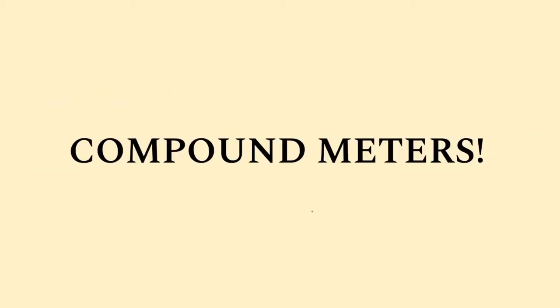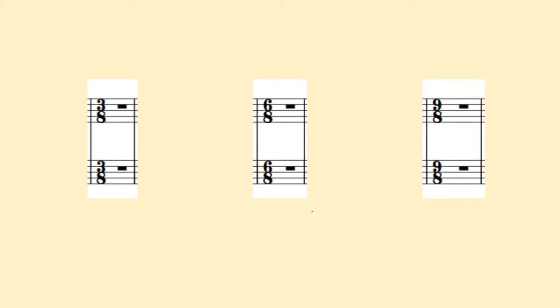Compound meters are meters that divide the beat into three equal parts. Some of these meters can include 3/8, 6/8, and 9/8. Let's look at the 6/8 one in more detail.